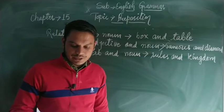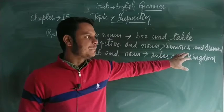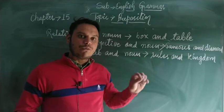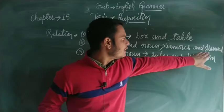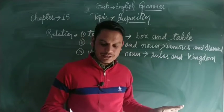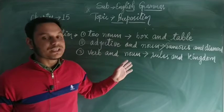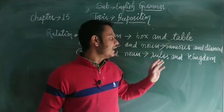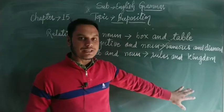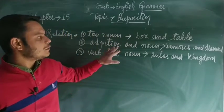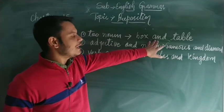Similarly, for adjective and noun: 'South Africa is famous for its diamonds.' Here 'for' generates the relation between the adjective 'famous' and the noun 'diamonds.' South Africa is known for its diamonds, so 'for' is the preposition connecting them.